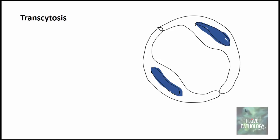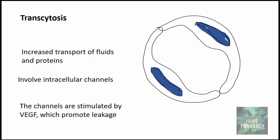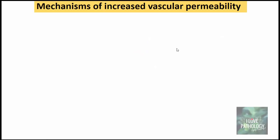The third mechanism is endothelial injury caused by leukocytes: neutrophils adhering to the endothelium can themselves injure the endothelial cells, and this is also sustained for several hours. The fourth mechanism is transcytosis, which involves increased transport of fluids and proteins through intracellular channels stimulated by vascular endothelial growth factor (VEGF). This allows fluid to escape through the endothelial cells themselves, without gap widening or cell injury.